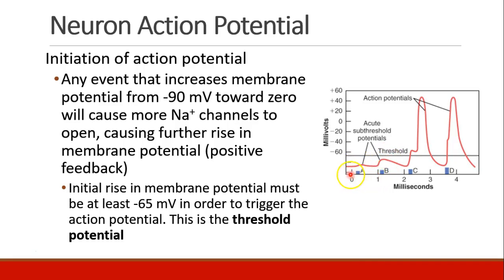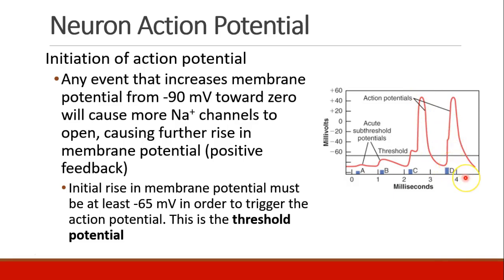Here in the figure you see A and B — not quite enough of a potential. We call this a sub-threshold potential. It doesn't cross the threshold, and so the full action potential doesn't develop, and the resting potential resumes. But here at C, we see we've crossed the threshold, and now the positive feedback snowball effect occurs, and a full action potential occurs with depolarization followed by repolarization. And then in D, we see another action potential occurring.